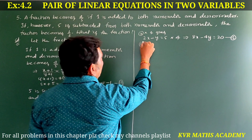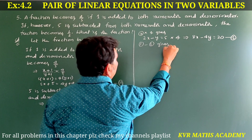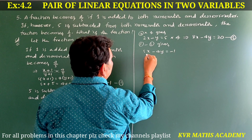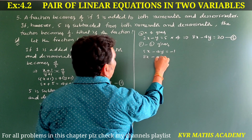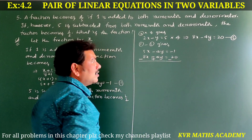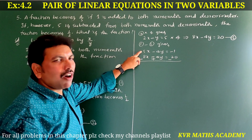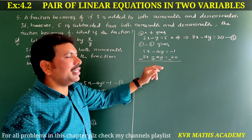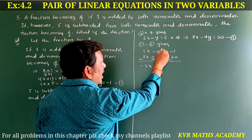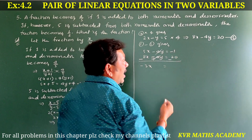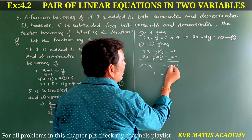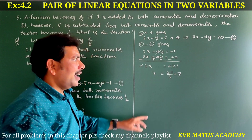Now solve equations 1 minus 3. Equation 1: 5x minus 4y is equal to minus 1. Equation 3: 8x minus 4y is equal to 20. Subtracting: 5x minus 8x gives minus 3x, and minus 4y plus 4y cancels. So minus 3x is equal to minus 21, giving x is equal to 7.